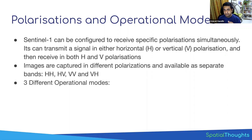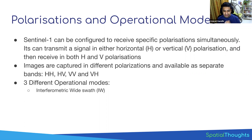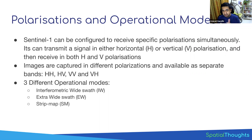Along with polarization, the sensor itself can be configured to operate in different modes. The most commonly used mode is IW, which is interferometric wide swath. Other modes include extra wide swath, which has lower resolution but captures a much larger area, and strip map, which has higher resolution but covers a smaller region. Most of the time, the satellite is operating in IW mode.